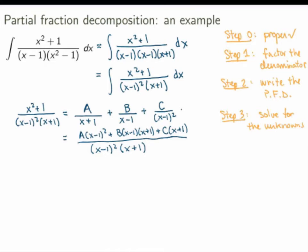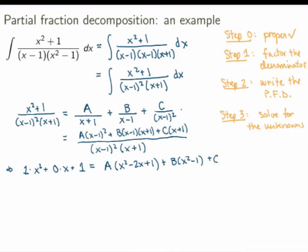The only way these two rational functions can be equal — since they have the same denominator — is for the numerators to be exactly equal. The numerator on the left-hand side, written explicitly as 1·x² + 0·x + 1, must equal the expanded right-hand side. Expanding: A times x squared minus 2x plus 1, plus B times x squared minus 1, plus C times x plus 1. Collecting powers of x: the x² coefficient is A plus B, the x coefficient is minus 2A plus C, and the constant term is A minus B plus C.